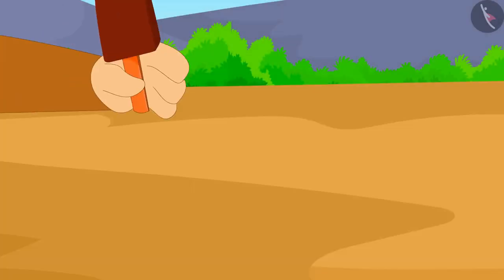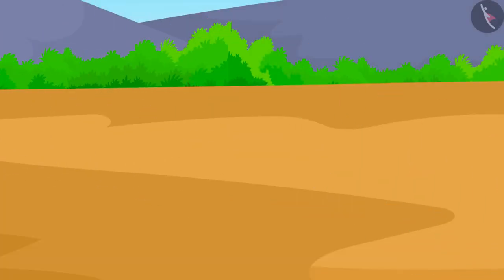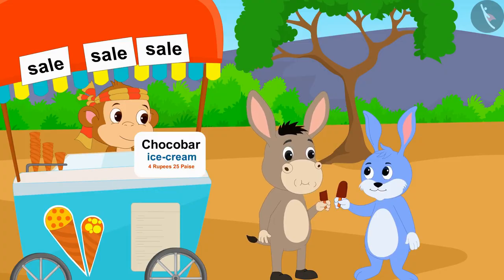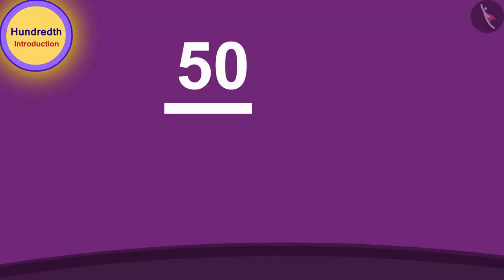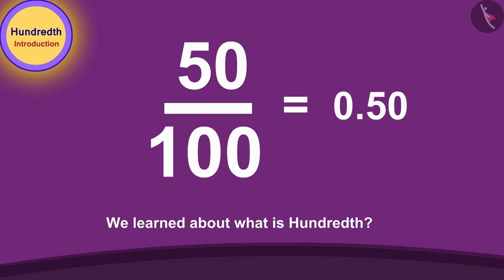Bunny and Bhola bought one Chocobar ice cream each from Babban and happily returned home eating ice cream. Children, in this video we learned about what is hundredth. In the next video, we will learn more about it through some interesting examples.